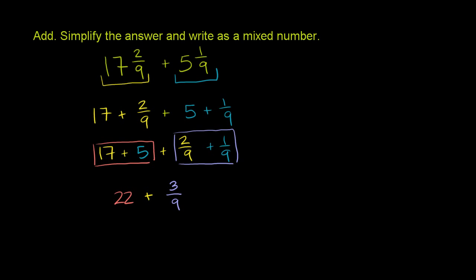But this can be simplified. Both the numerator and the denominator are divisible by 3. Divide the numerator by 3, you get 1. Divide the denominator by 3, you get 3.